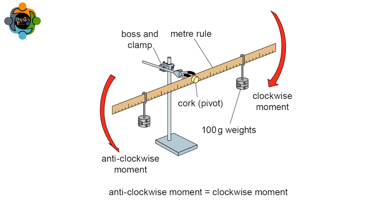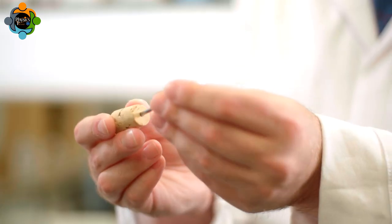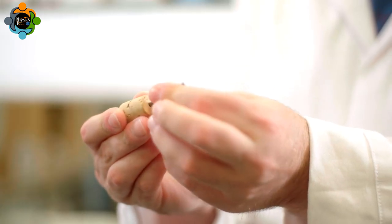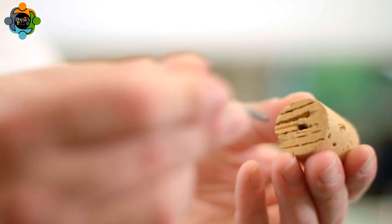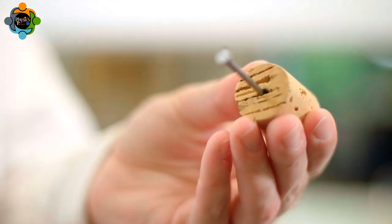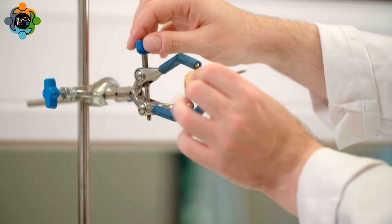First, the nail is carefully pushed through both corks to make tight-fitting holes. The first cork and nail is then clamped in the stand.